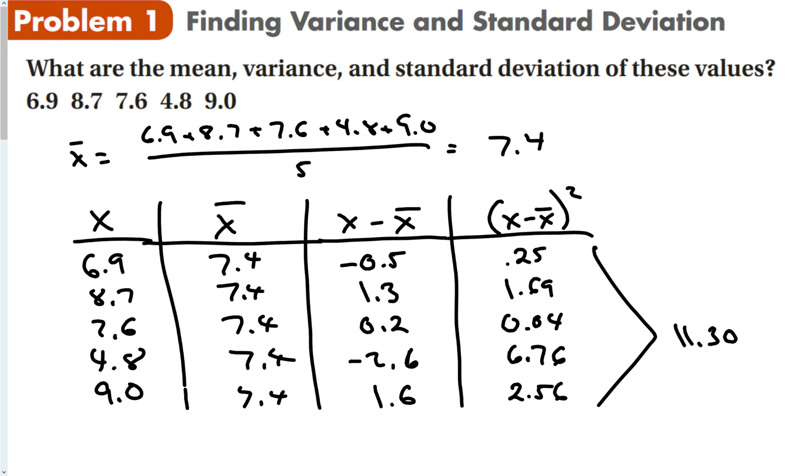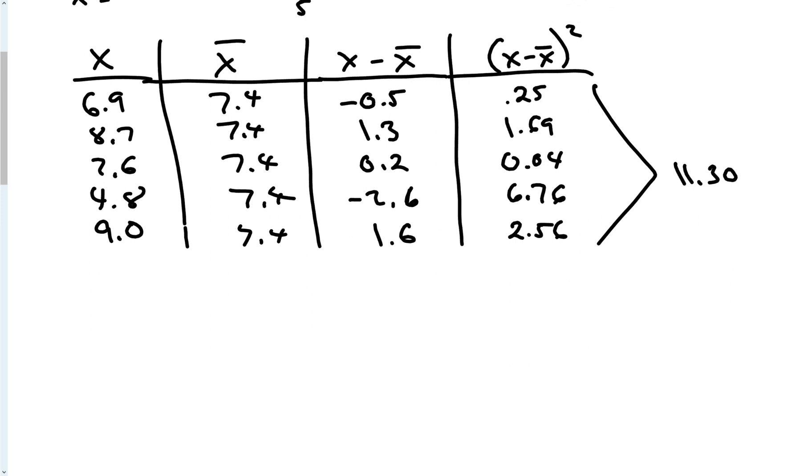We take that sum, which is the sum of the squares. So sigma squared is 11.3 divided by 5, which is 2.6. Then to find sigma, I take the square root of 2.6, which is about 1.5. This number is the variance, and this is the standard deviation.